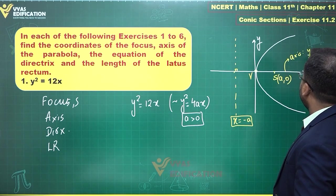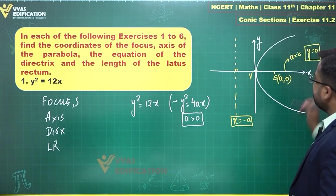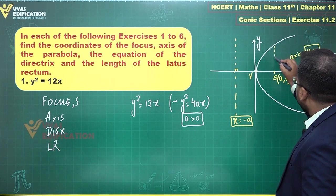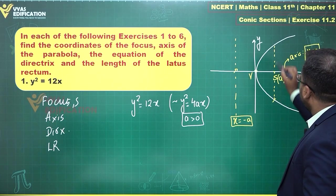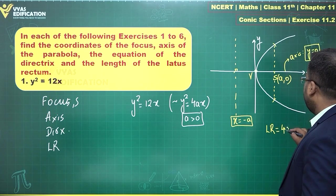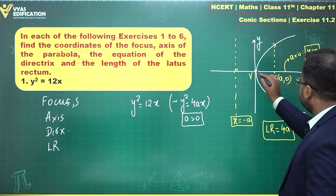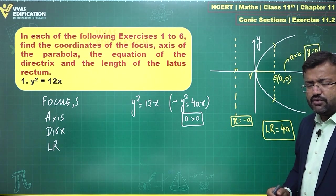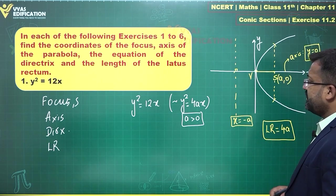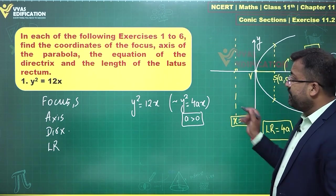This here is the axis. The equation of axis is simply Y = 0. This is the X axis. X axis acts as the axis. And what about the latus rectum? This here is the latus rectum from this point to this point and length of latus rectum is simply 4a which is 4 times this distance. That's what you can observe.